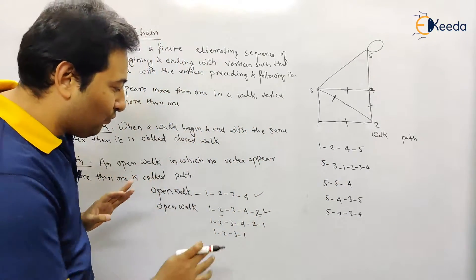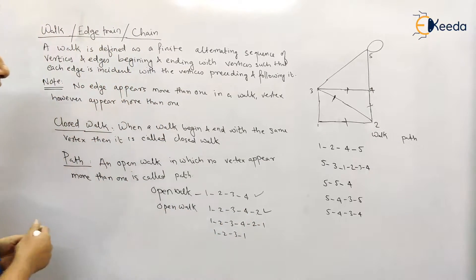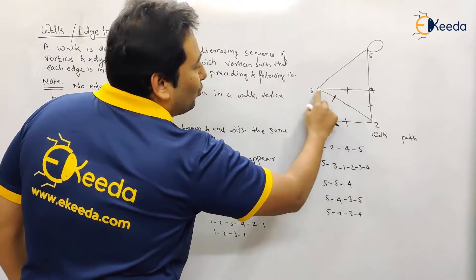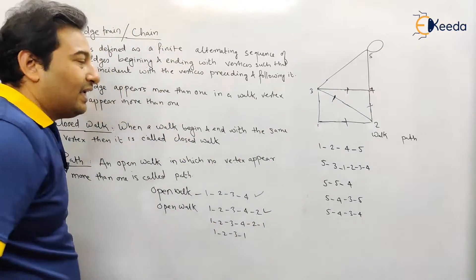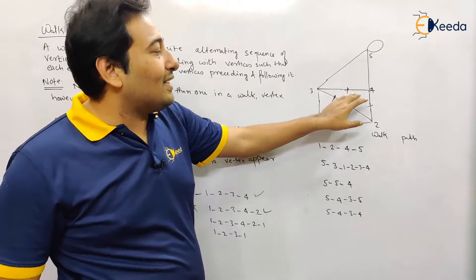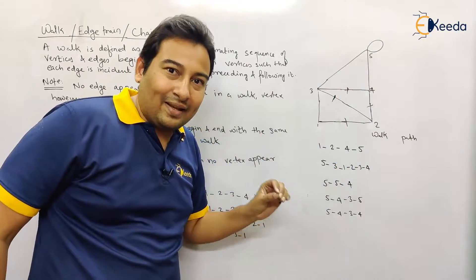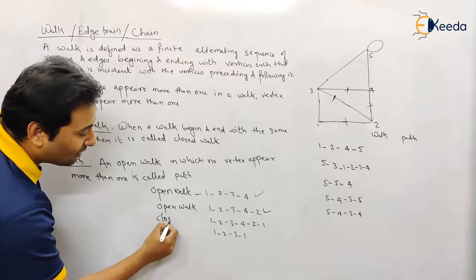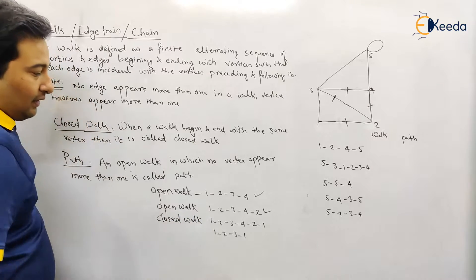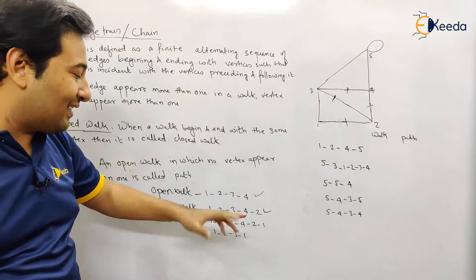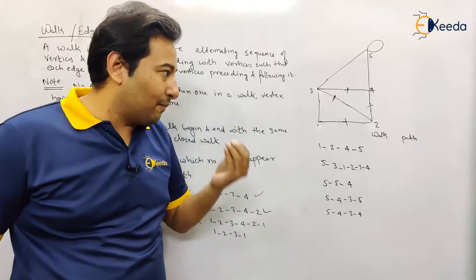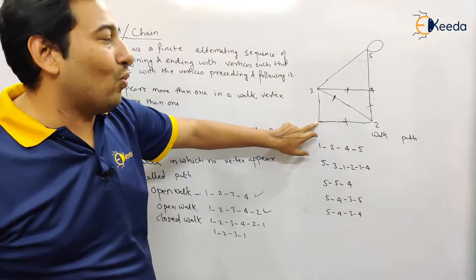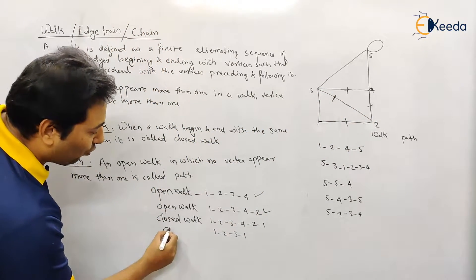Next traversal: 1-2-3-4-1. Again, all edges are visited once. Since the starting and ending vertex are the same, it's a walk but this time it's a closed walk. Vertex 2 is repeated but it doesn't matter because there is no restriction on vertices. The last example is 1-2-3-1, which is also a closed walk.